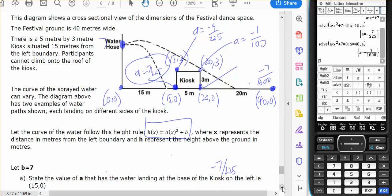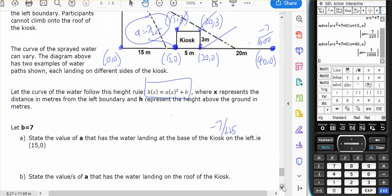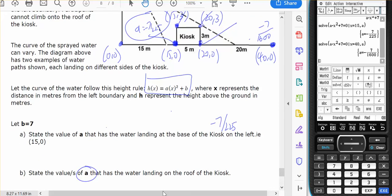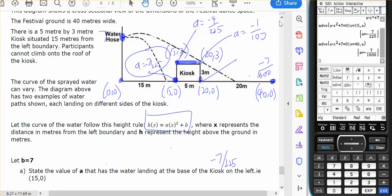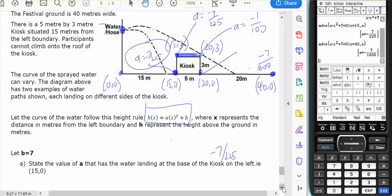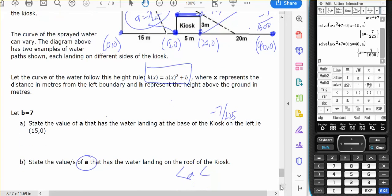So it's the values of a that the water lands on the roof of the kiosk. To land on the roof of the kiosk it's got to be between here and here. So a has to be between negative four on 225 and negative one on 100. I'll have equal to as well.